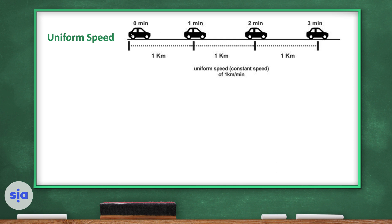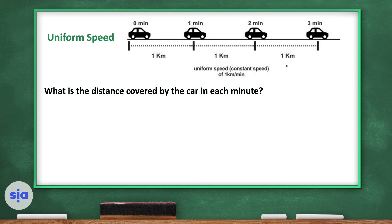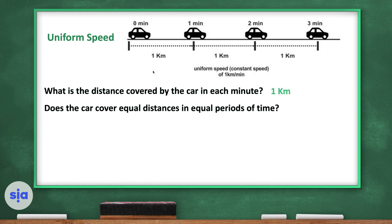This car covers one kilometer in the first minute, another one kilometer after the second minute, and also one kilometer after three minutes — so it's moving at a constant uniform speed. The car covers equal distances of one kilometer in equal periods of time each minute.